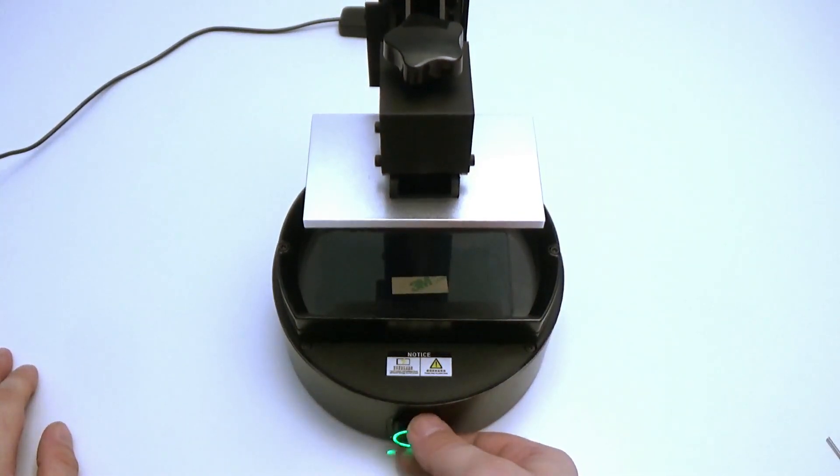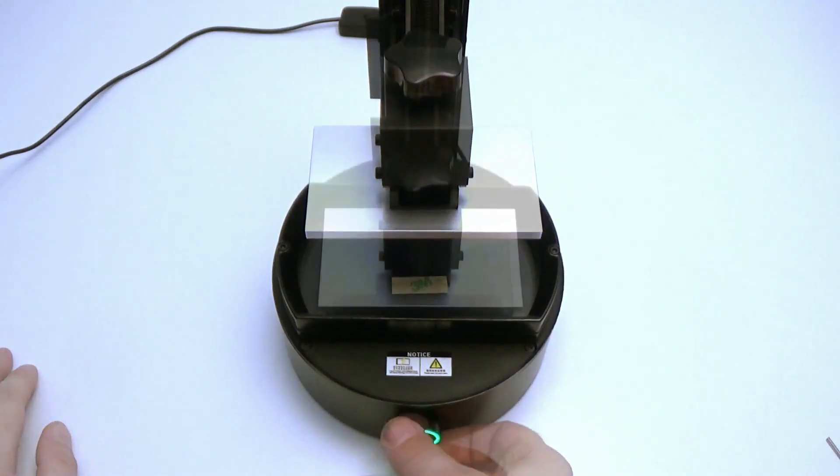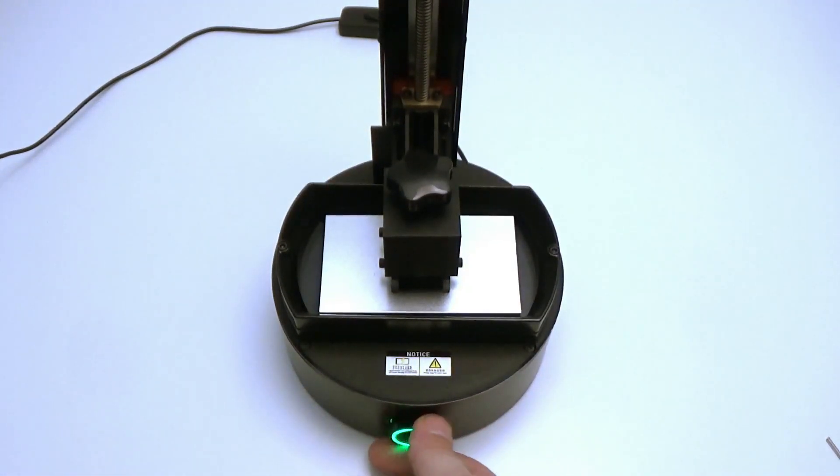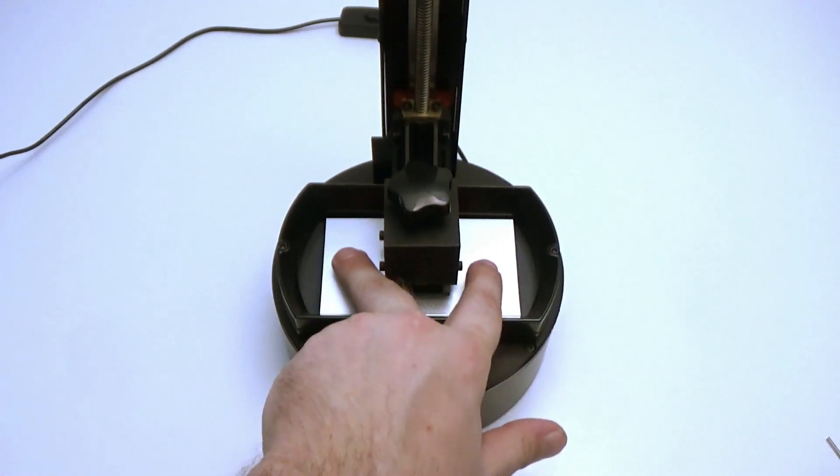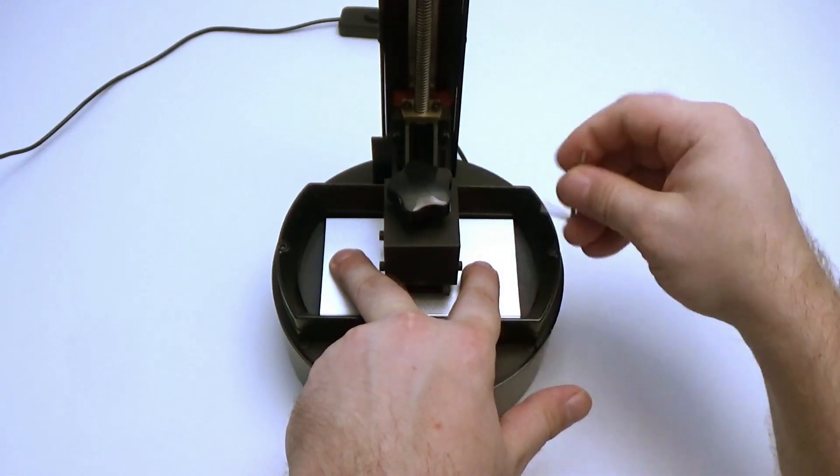Turn the jogwheel to the right to move the build plate down. Turn it until the limiting switch is invoked and the build plate stops moving. Press down on the build plate and fasten the screws. Make sure they are tight.